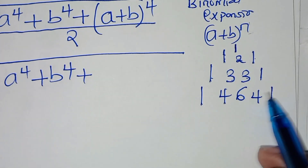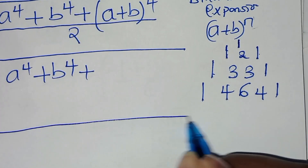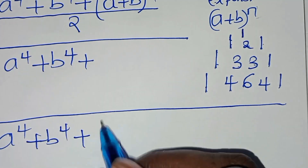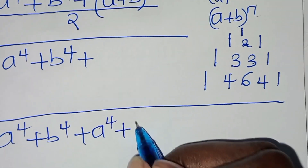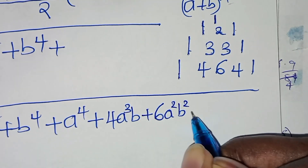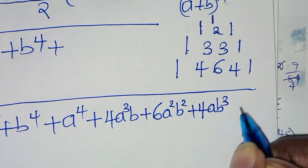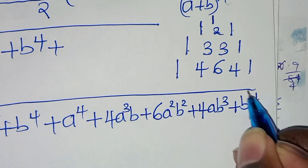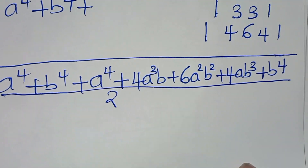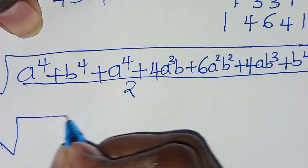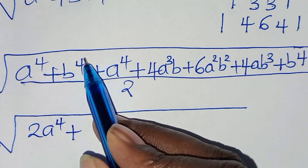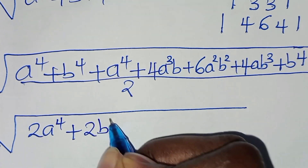Substituting these coefficients, we have the square root of a to power 4 plus b to power 4, plus the expansion: a to power 4 plus 4a³b plus 6a²b² plus 4ab³ plus b to power 4, all divided by 2. Simplifying by dividing everything by 2: we get the square root of 2a to power 4 plus 2b to power 4, then plus the remaining terms.